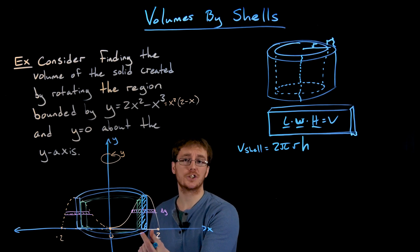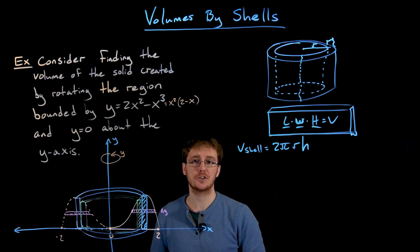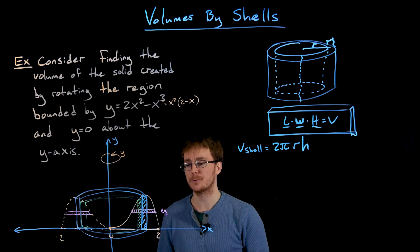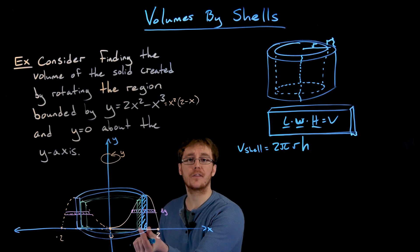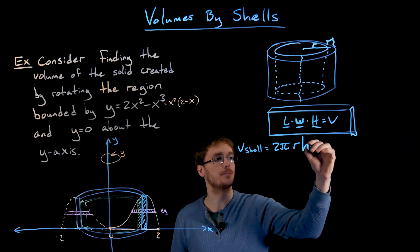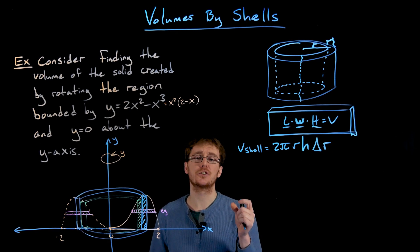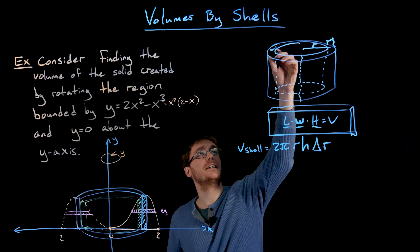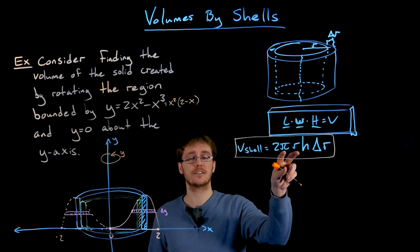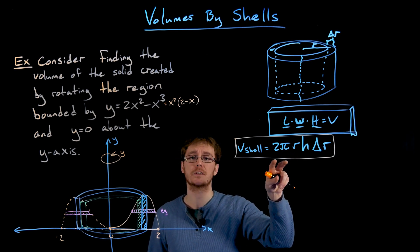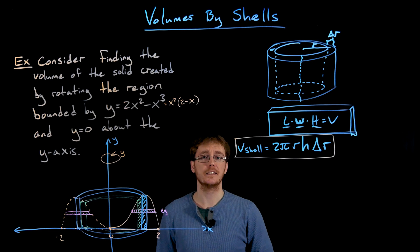The width depends on whether we're using a vertical or horizontal approximating strip. In this setup we're using a vertical strip with a small thickness in the x direction, so that's delta x, but for our general formula we leave it as delta r — a small change in the radii between the inner and outer cylinder. This general volume formula for a cylindrical shell — 2 pi times r times h times delta r — is important to remember for all shell method problems.